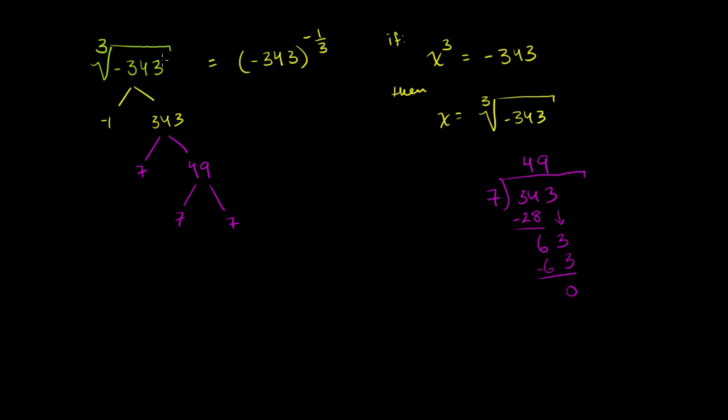So we can rewrite this expression up here. We can rewrite it as the cube root of negative 1 times 7 times 7 times 7. Or another way to think about it, we could view this as being equal to the cube root of negative 1 times the cube root of 7 times 7 times 7. Now what's the cube root of negative 1? What number to the third power is equal to negative 1?